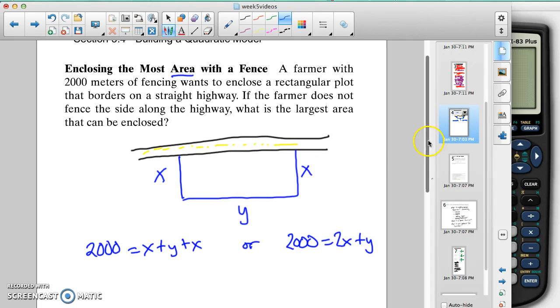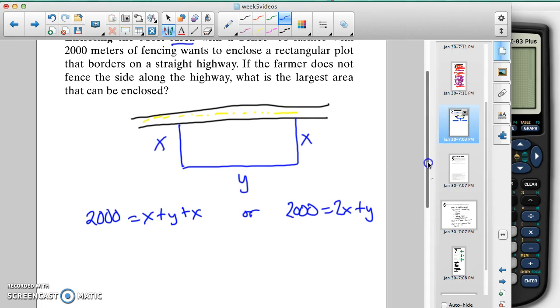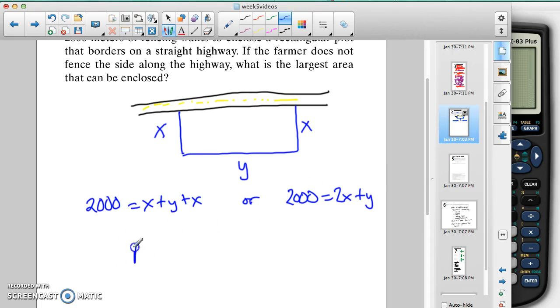Now, what we're trying to do here, though, is maximize the area, largest area. So we need to write the area of this shape. This shape's a rectangle. So the area of this rectangle is going to be length times width. So this is going to be my area formula, area of rectangle, is what we're doing here.